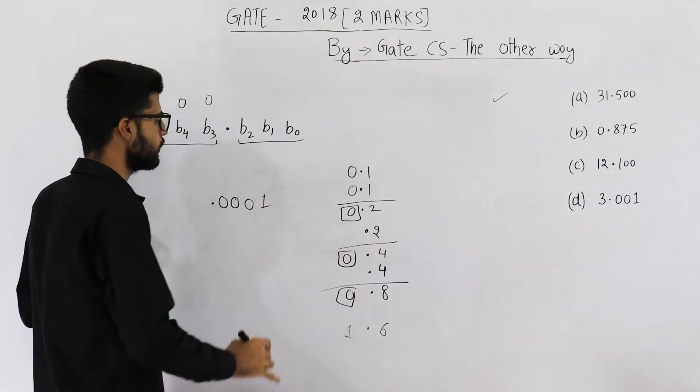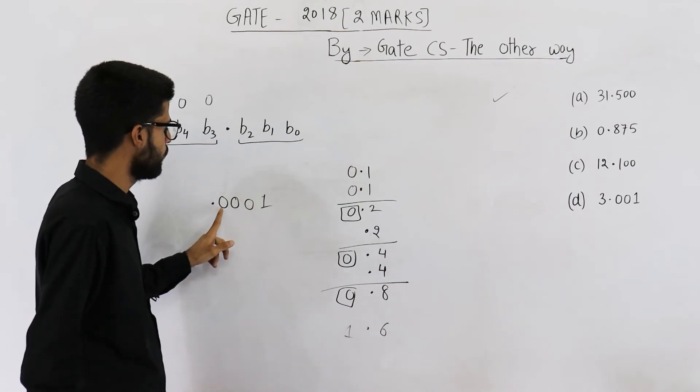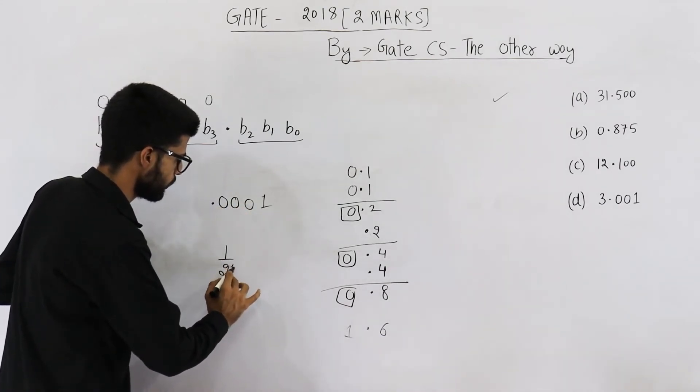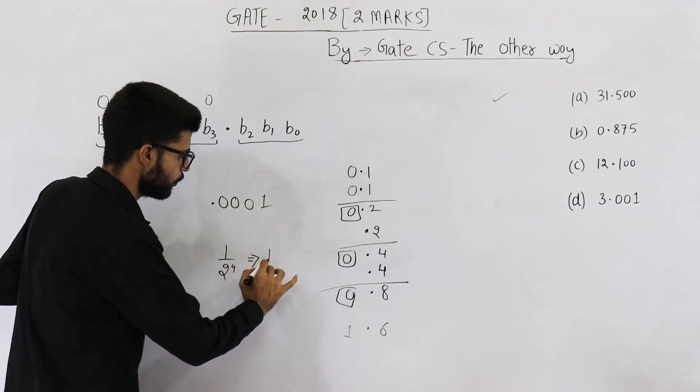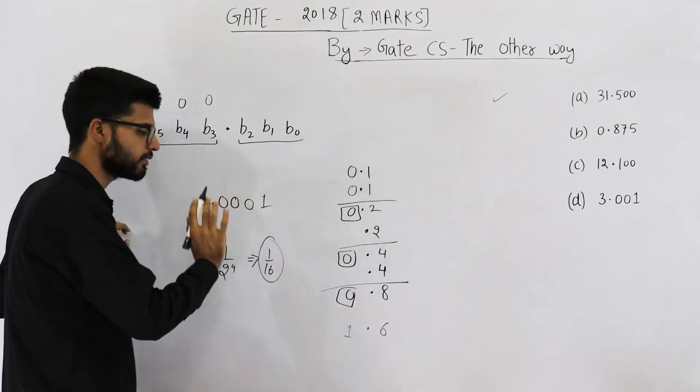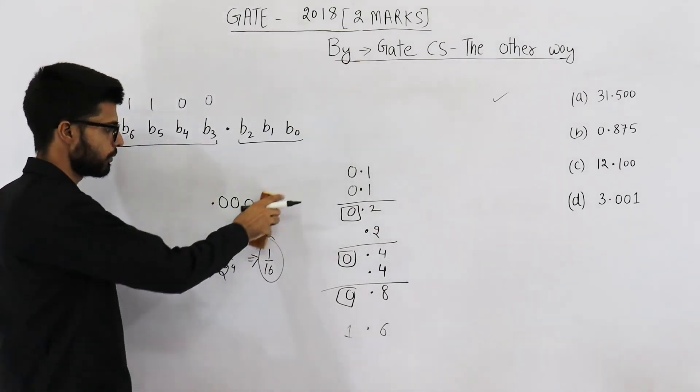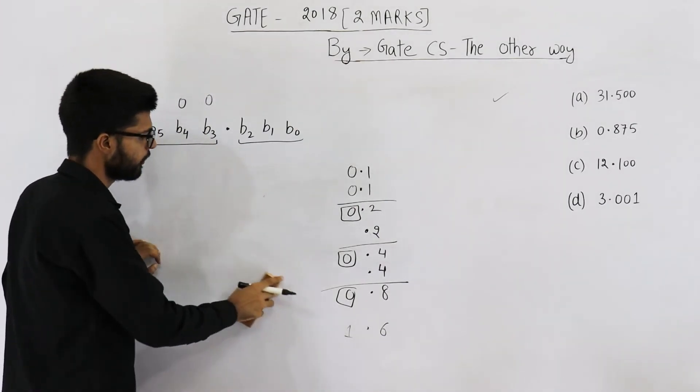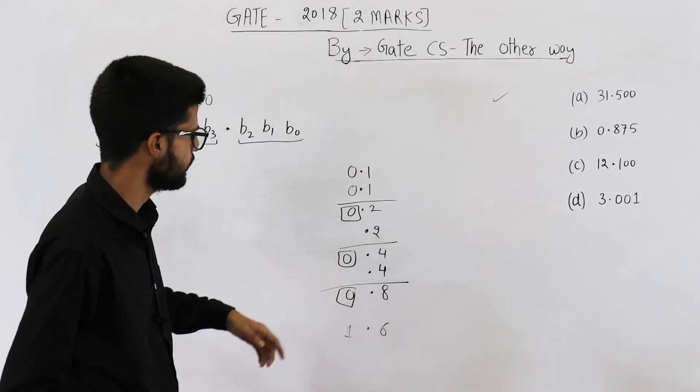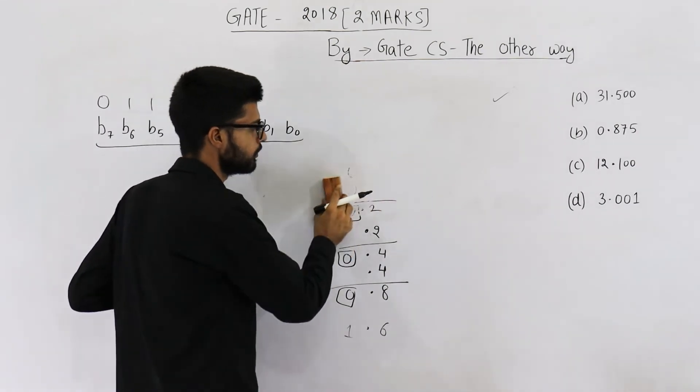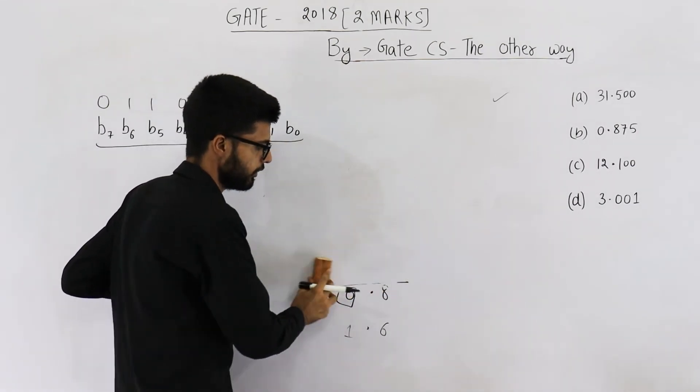See, if you have 4th bit on, its value will be 1 upon 2 raised to the power 4, which is 1 upon 16. You will represent this value. 0.1 cannot be exactly represented in 4 bits also. Anyways, we have seen that option C is not represented in this number system. Let us now focus on option D.